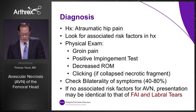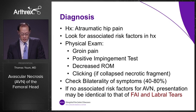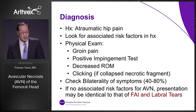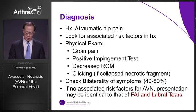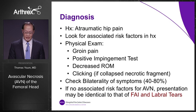How do we diagnose avascular necrosis? In the history, it is typically an atraumatic hip pain, and you want to look for associated risk factors such as steroid use. On physical exam, you may find groin pain, a positive impingement test, and decreased range of motion. There may be clicking in the hip, especially if there is a collapsed necrotic fragment. You want to check for bilaterality — in 40 to 80 percent of cases, avascular necrosis occurs in both hips. If there are no associated risk factors, the presentation may be identical to that of FAI and labral tears.